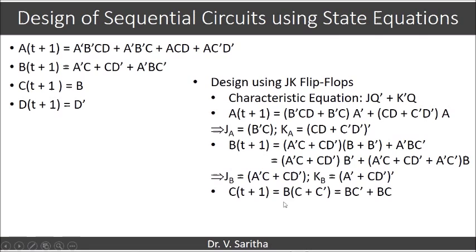Now, comes C(t+1). C(t+1) we are writing it as B(C + C'). So, this is nothing but BC' + BC. So, we can write JC as B and KC as B'.